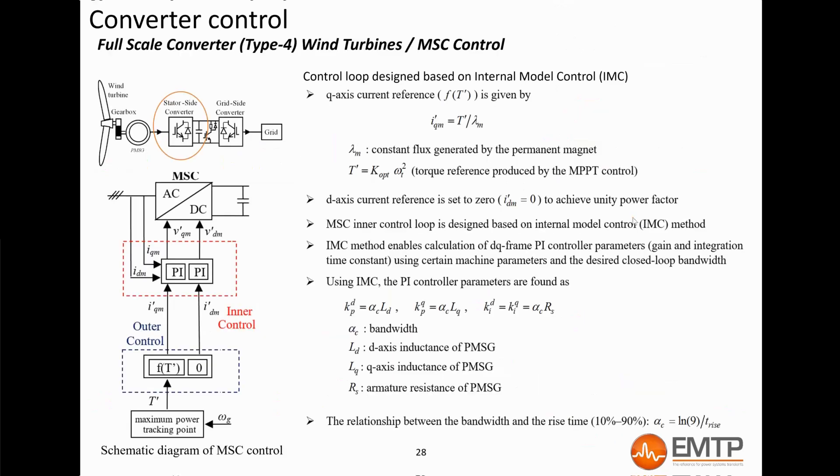On the machine side, the DQ-transformation angle follows the permanent magnet machine flux. The Q-component corresponds to the real power, and the D-component to the reactive power. Therefore, by controlling the Q-axis current, the converter controls the machine electromagnetic torque. The D-axis current is controlled to zero, as there is no need for reactive power on the machine side.